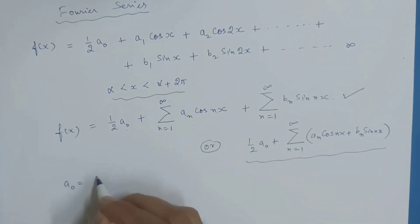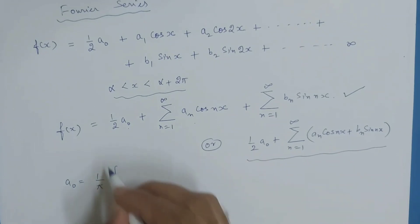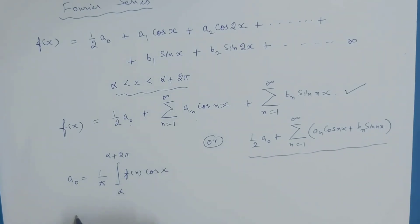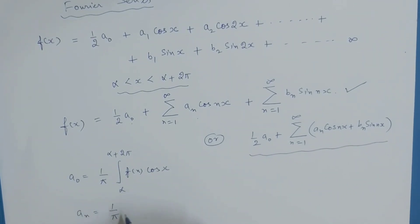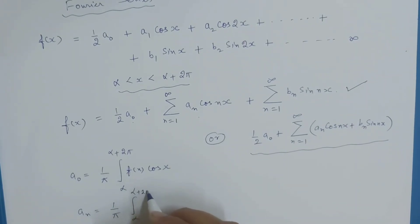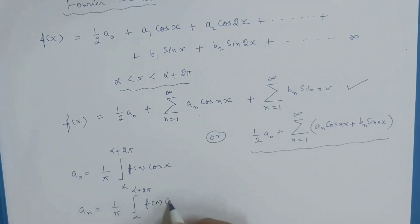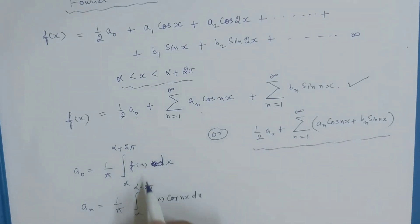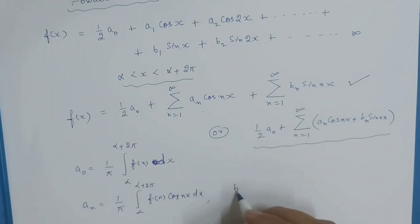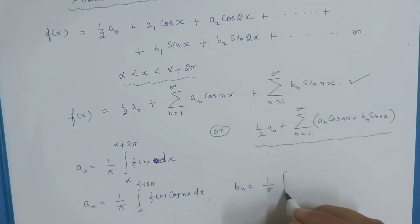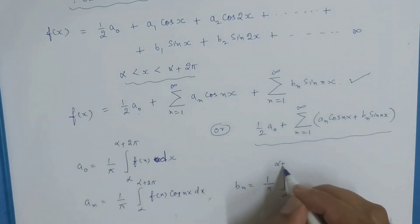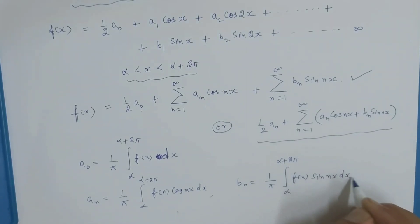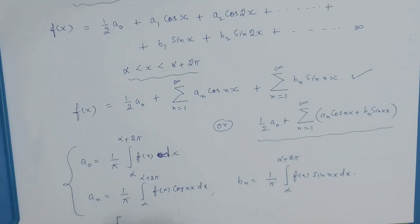a_naught की value होगी: a_naught = (1/π) ∫[α to α+2π] f(x) dx. a_n = (1/π) ∫[α to α+2π] f(x)·cos(nx) dx. b_n = (1/π) ∫[α to α+2π] f(x)·sin(nx) dx. These are Euler's formulae.